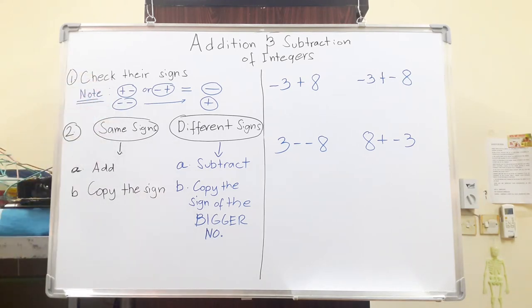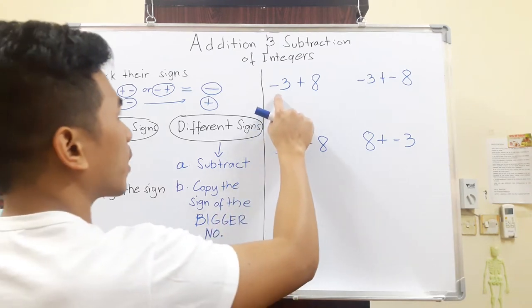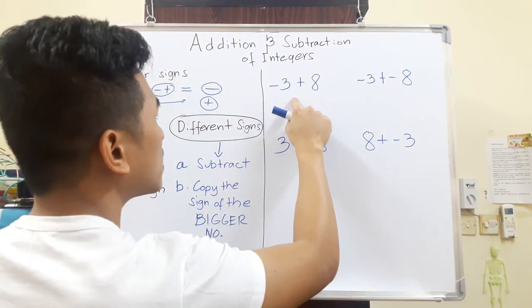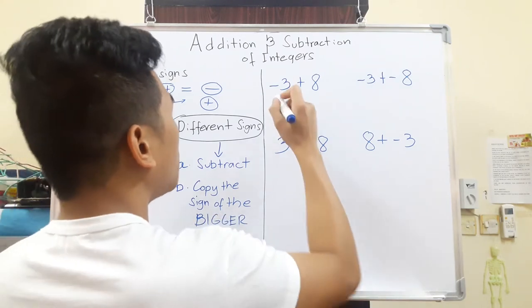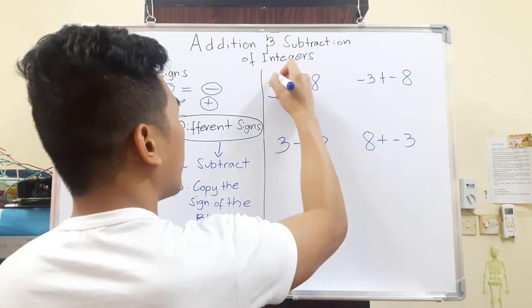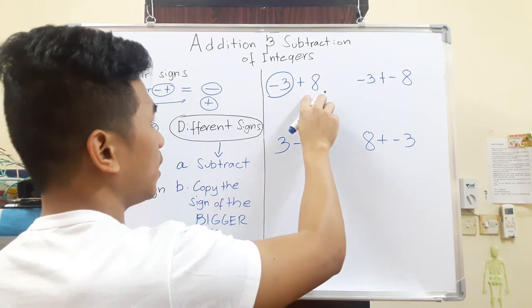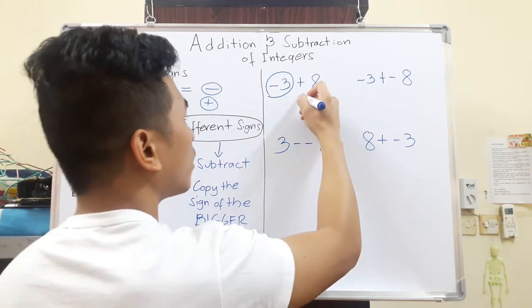Number one is check the signs. When you say check the signs, for example we have a number three here, the sign on its left side is the sign of the number. So if it helps, you can circle the number and the sign. You can do the same thing here, circle the number and the sign on its left side.